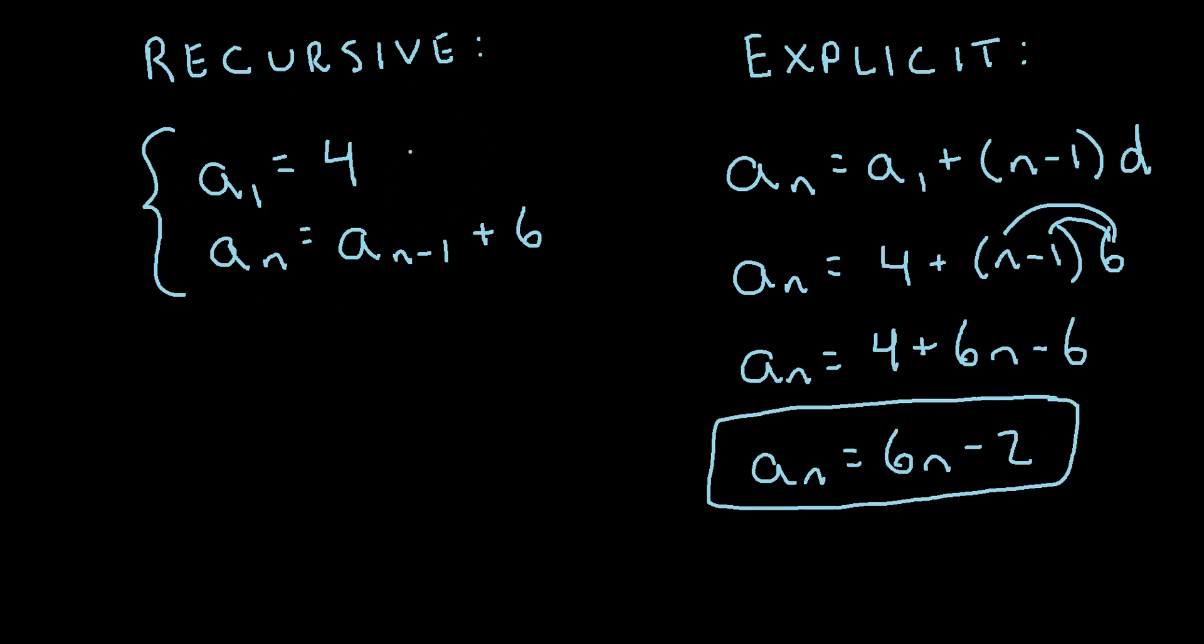That's how we can write this recursive formula as an explicit formula. The benefit of using an explicit formula is that if you want to find the nth term in the sequence, say the fifth term, all you have to do is plug in 5 for n. 6 times 5 is 30, minus 2 is 28, so the fifth term in this sequence would be 28.